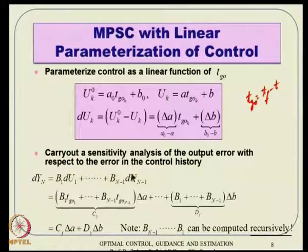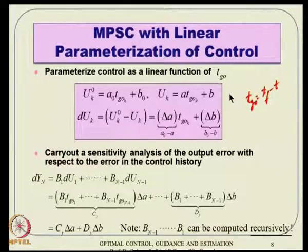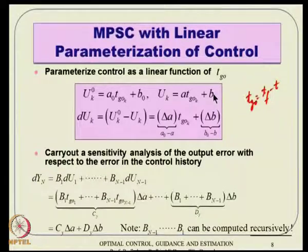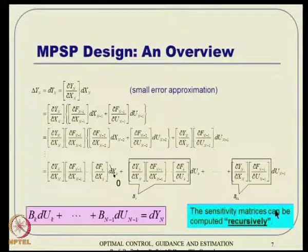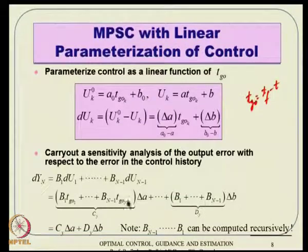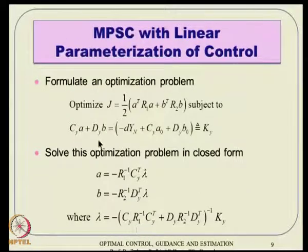It turns out that delta_u_k can be approximated as delta_a times t_go_k plus delta_b, where delta_a and delta_b are defined as the parameter errors. The entire expression of control delta_u_k is expressed in terms of delta_a and delta_b for any value of k. For various values of k, t_go_k will change, but delta_a and delta_b remain the same. Using this, we go back and find that delta_y_n can be expressed as a linear combination of delta_a and delta_b.